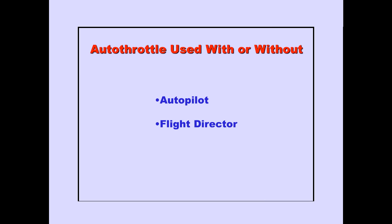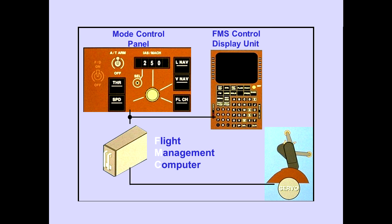The autothrottle can be used with or without the autopilot and with or without the flight director. The mode control panel and the FMS-CDU provide inputs to the flight management computer. The FMC sends signals to the servo motor, which moves the thrust levers. The flight management computer will be discussed in the FMS module.